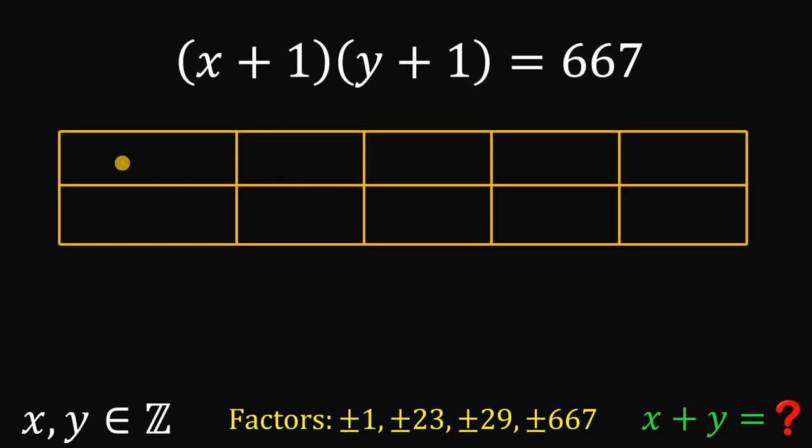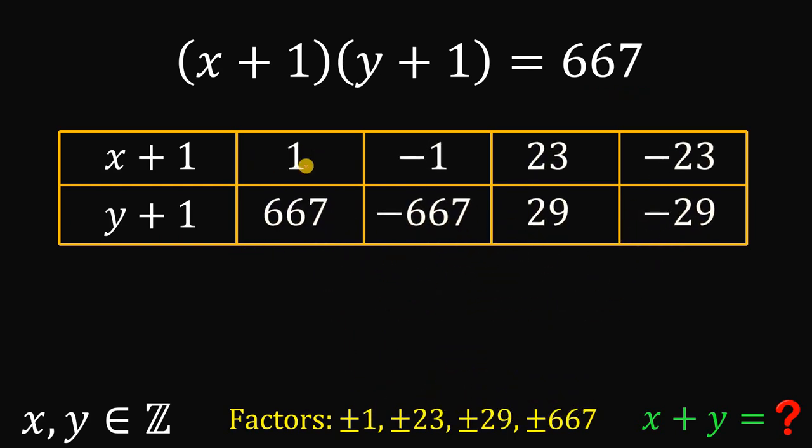Now, what we're going to do is make some tables. And on this table, we have here x plus 1 and y plus 1. Those are the factors that when we multiply, we get 667. So, x plus 1 or y plus 1 can be these factors.